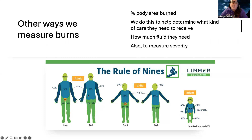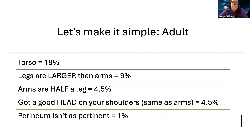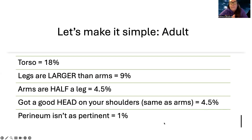We use what's called the Rule of Nines, because for adults everything is in nines: 9%, half of 9% is 4.5%, and double is 18%. A simple way to remember it for adults: the torso is 18%, legs are larger than arms so legs are 9% while arms are half a leg at 4.5%. Your head is 4.5%, and the perineum is 1%. This can be something to study on a notecard if you're struggling with it — it's a common exam question.